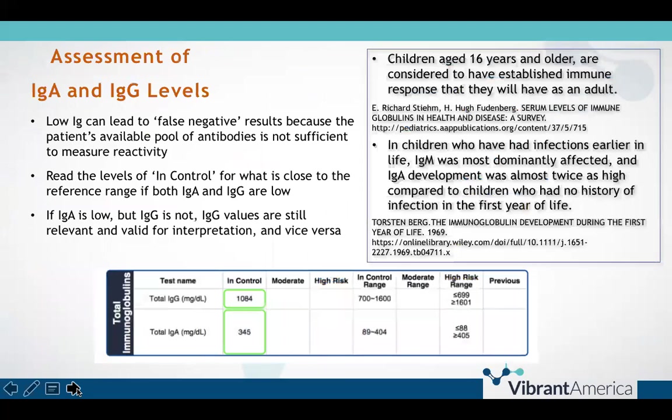The Wheat Zoomer includes total immunoglobulin levels for IgA and IgG in order to assist providers in interpreting the test results. If a patient has low or low-normal immunoglobulin levels for either or both IgA and IgG, the Wheat Zoomer and other antibody tests may appear largely non-reactive. You can, however, look at values that are in the in-control range and compare them to the reference range. For instance, in a patient with low total IgA and IgG, anti-gliadin antibodies above 0.70 may still be relevant even though the upper end of the in-control reference range is 0.89, because relative to that patient's total immunoglobulin pool, that can still indicate a higher than normal antibody response.